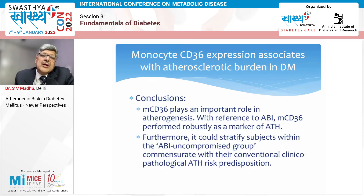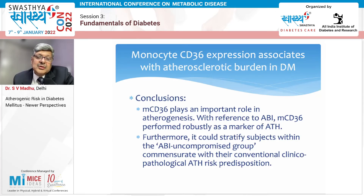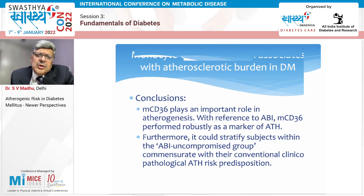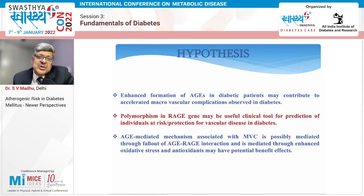CD36 expression seems to stratify patients in terms of atherosclerotic burden even where ABI is negative. We think it's an important biomarker in atherogenesis, could be a more robust marker than ABI, and could stratify patients where ABI is normal — since it elevates commensurate with conventional clinical-pathological risk of atherosclerosis.